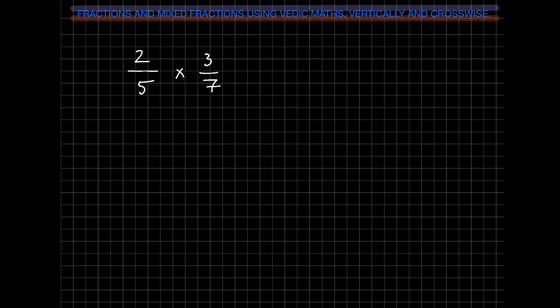The easiest operation to do with fractions is multiplying. To multiply fractions, you basically just multiply them straight across top and bottom. So the top: 2 times 3 is 6, and the bottom: 5 times 7 is 35. So our answer is 6 over 35.